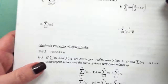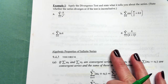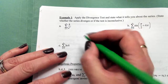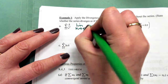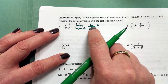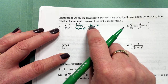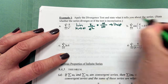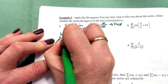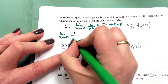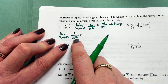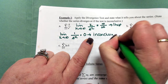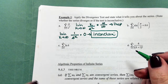Let's apply the divergence test. For the series k/e^k from k=1 to infinity, we find the limit as k→∞ of k/e^k. Both numerator and denominator go to infinity, so we apply L'Hôpital's rule. The derivative of k is 1, the derivative of e^k is e^k. So this is 1 divided by a very large number, approaching 0. This tells us nothing — the test is inconclusive. We'd have to pick another test for this series.